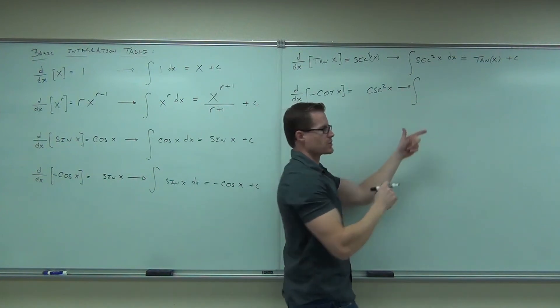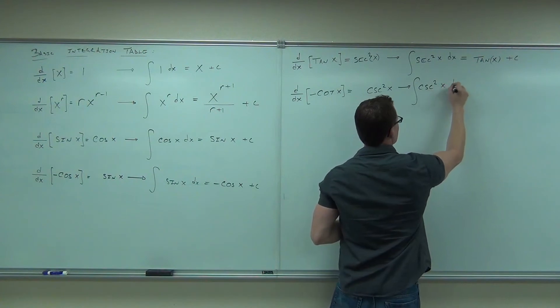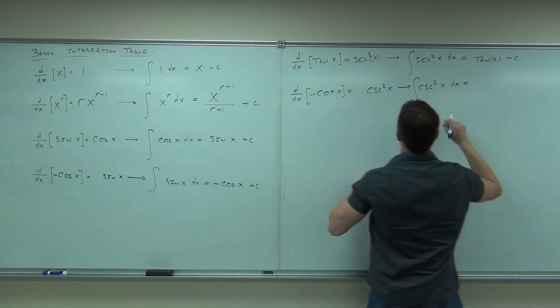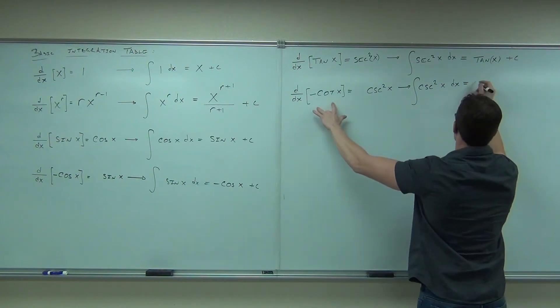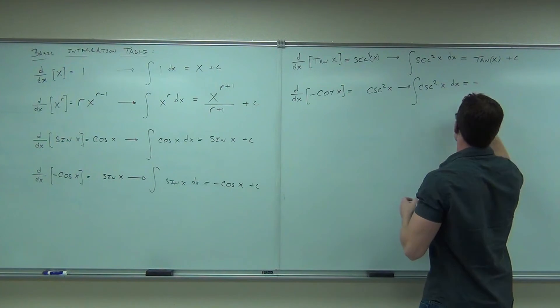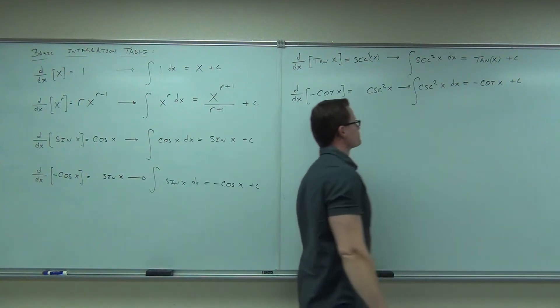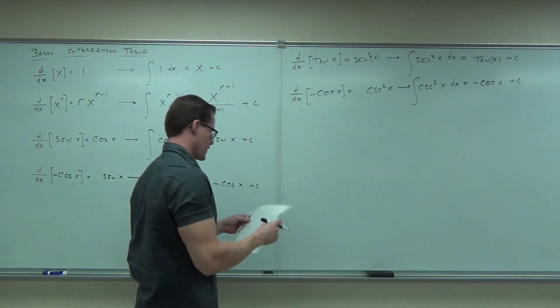So what's the integral of cosecant squared x? The integral has to undo that derivative. Don't forget the plus c. Two more.